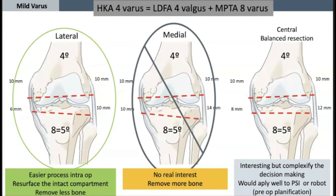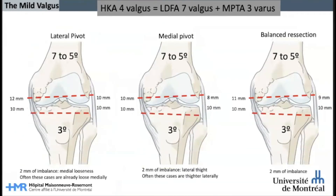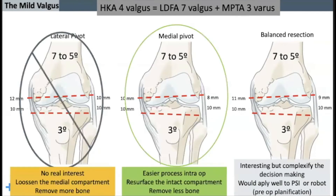My preferred option is to use the lateral pivot as we are used to do in traditional total knee replacement. This will leave us with a tighter medial compartment in case of modification, which we are used to deal with. Now let's look at the valgus knee. On the left image, if we use a lateral pivot point as in the varus knee, we loosen the medial compartment, which is not ideal for valgus knees. In the center image, it is a medial pivot point — we maintain the medial compartment stability and create a tighter lateral compartment, as in regular practice. The ideal solution is to resurface the intact compartment and use it as the pivot point.